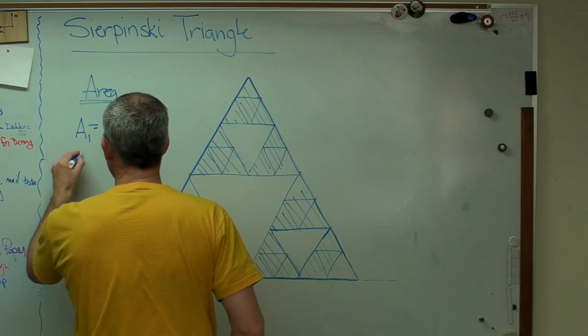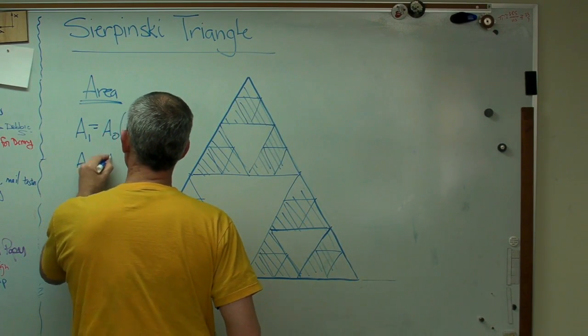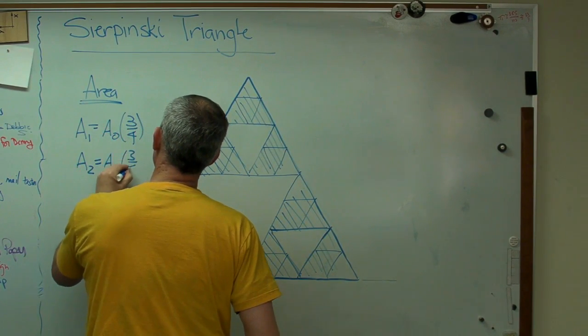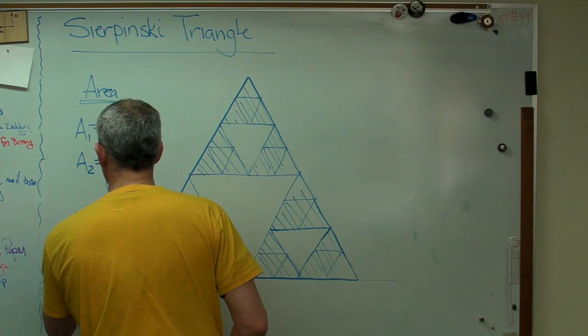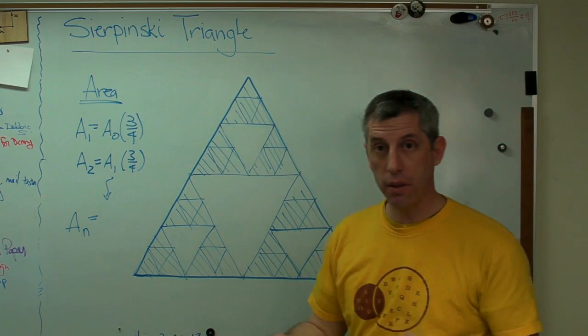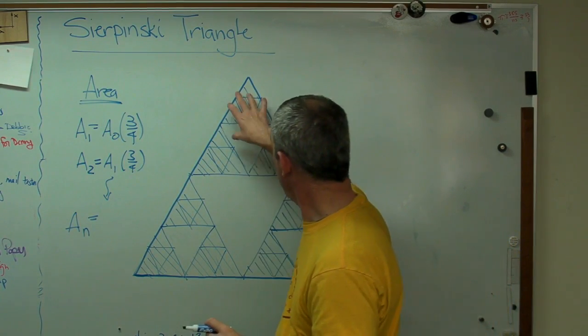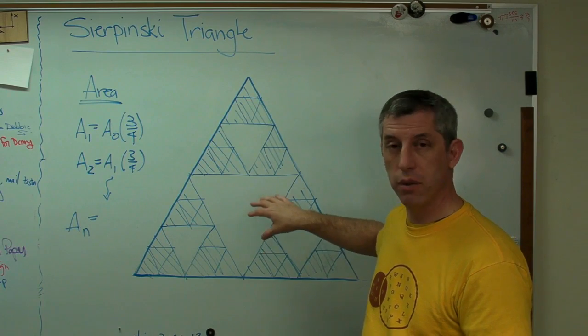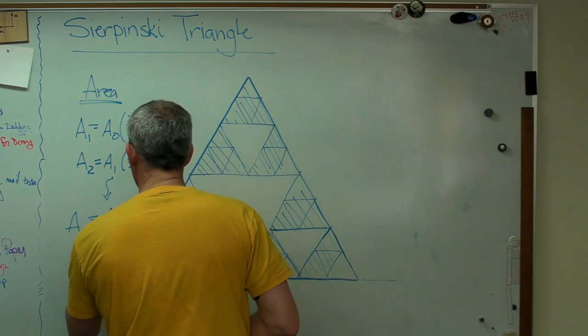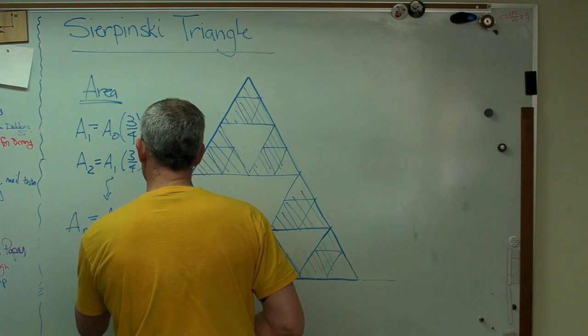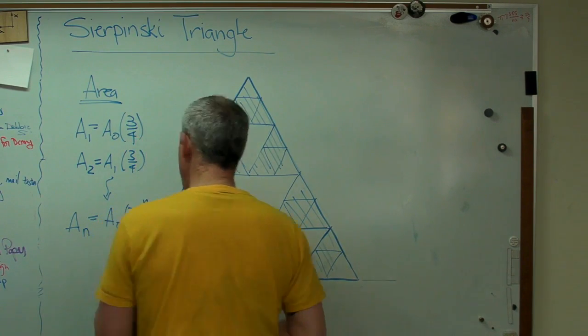Okay? And if you keep going, A2 equals A1 times 3 quarters and so on. What you'll find out is the area of the nth triangle, that means you've executed this algorithm n times, where n is just some integer, 1, 2, 3, 4, whatever, is going to be A0 times 3 over 4 to the n.